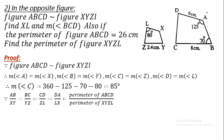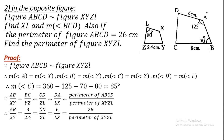We work with the ratios: BC/ZY = AD/LX = perimeter of ABCD / perimeter of XYZL. Substituting: 8/2.4 = 6/LX = 26/perimeter of XYZL. We use cross multiplication to find the unknown values.